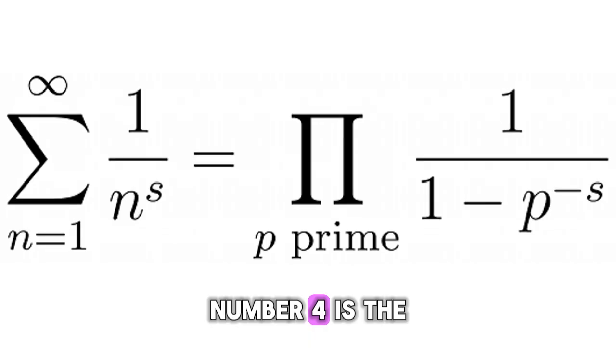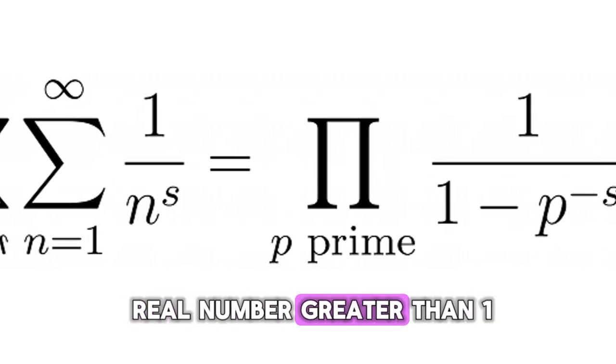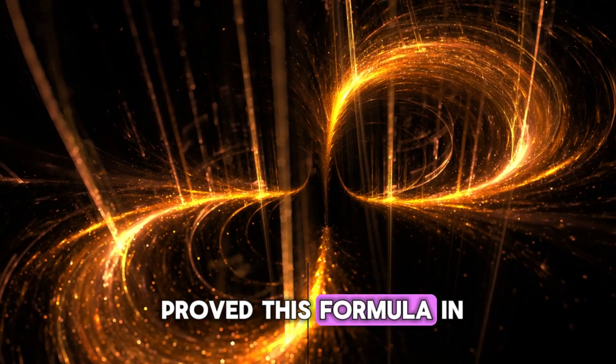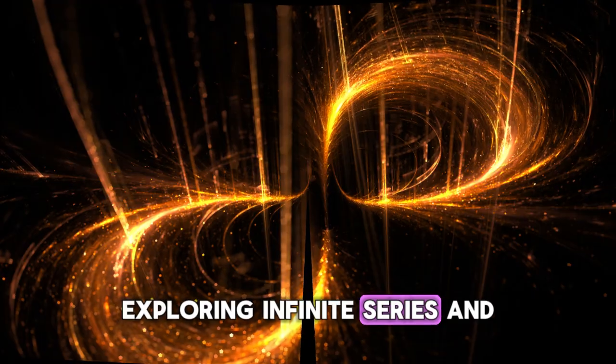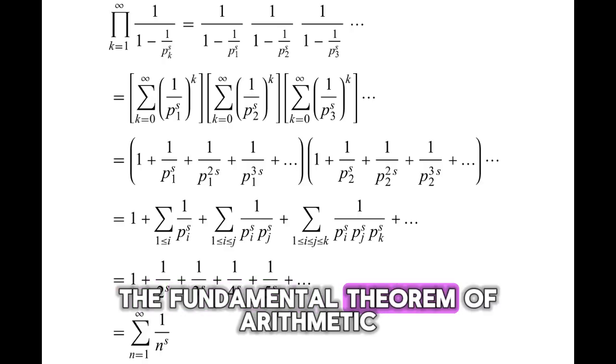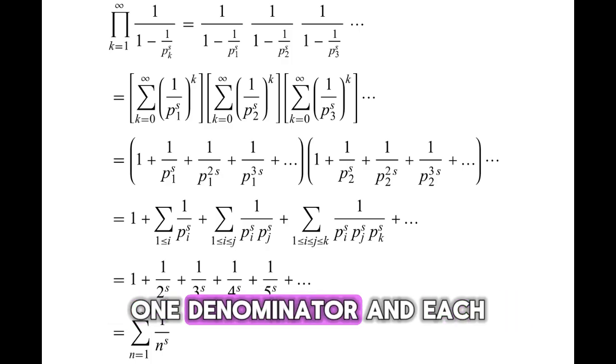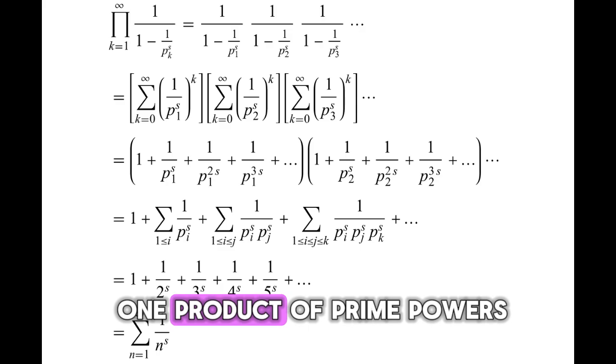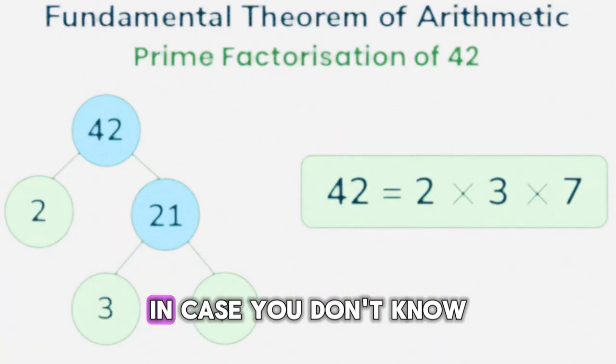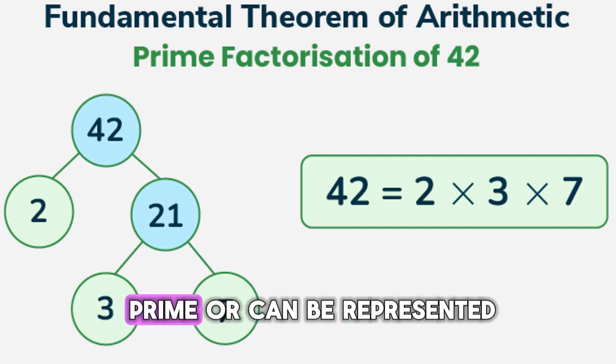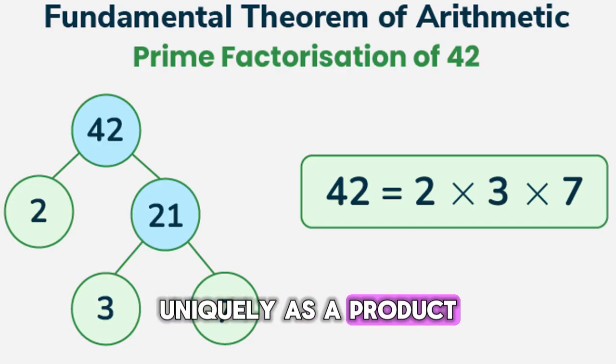Number four is the Euler product formula. S is a real number greater than one. The left-hand side is the famous Riemann-Zeta function. Leonhard Euler discovered and proved this formula in the 1730s while exploring infinite series and their relationship with prime numbers. The proof relies on the fundamental theorem of arithmetic since each product of prime powers appears in exactly one denominator and each positive integer equals exactly one product of prime powers.